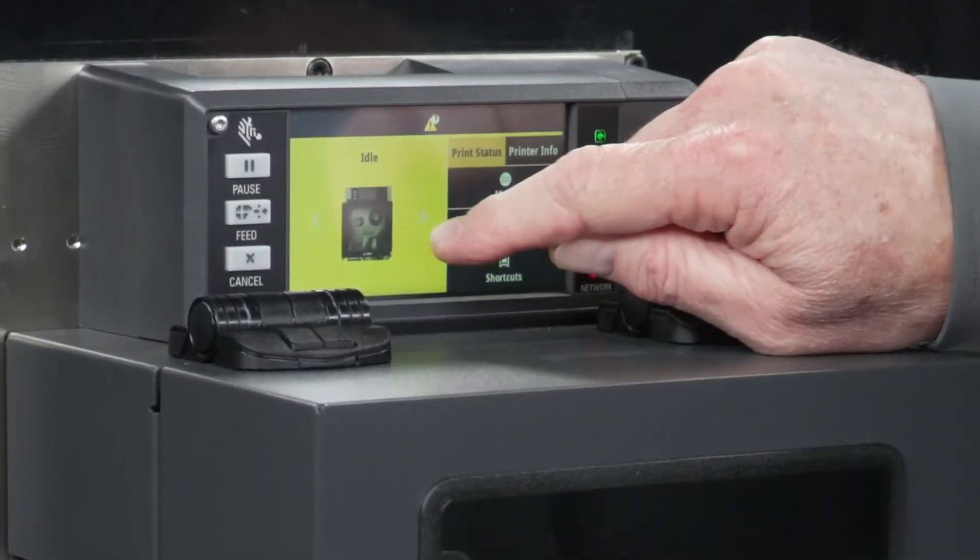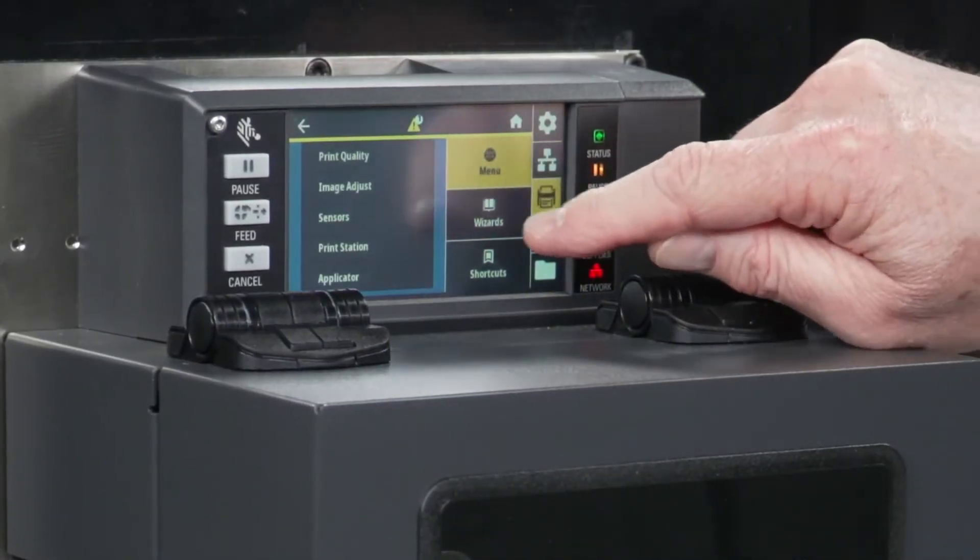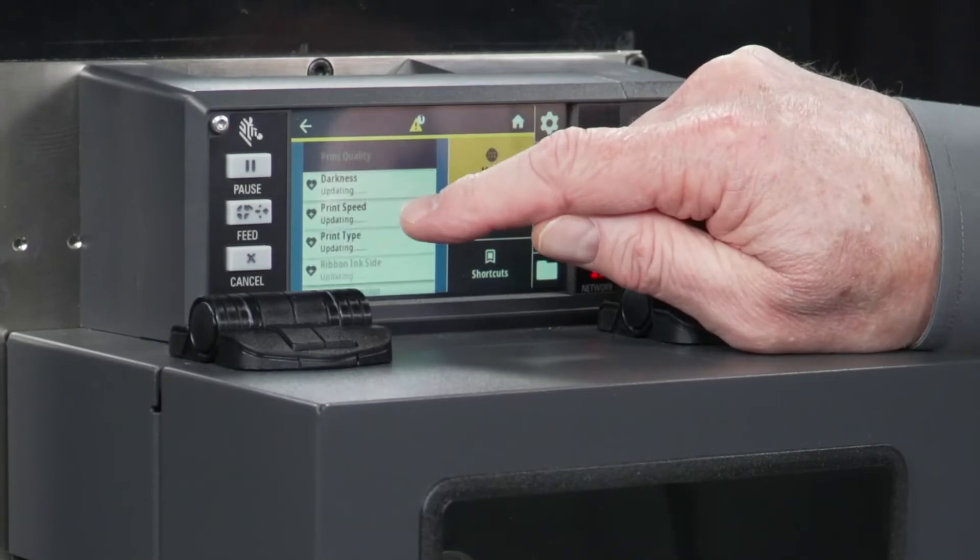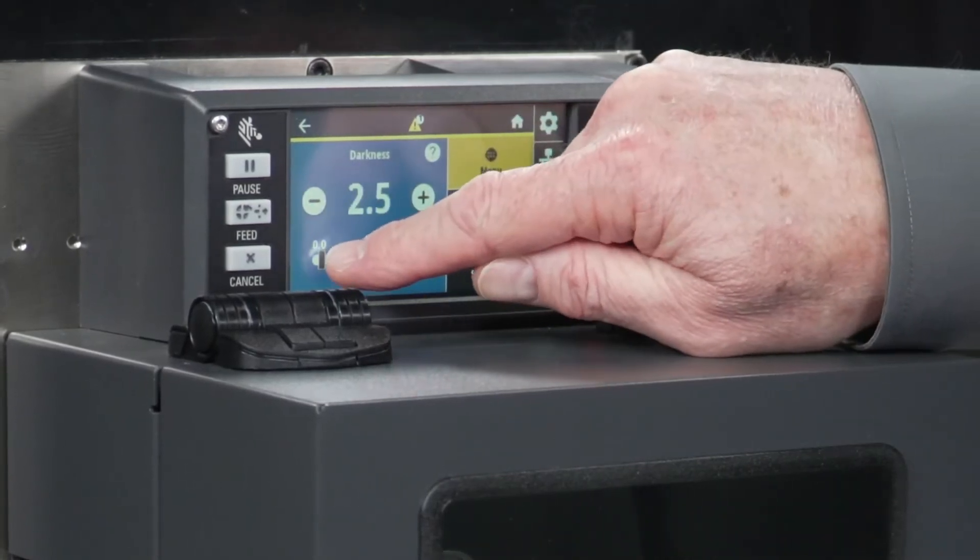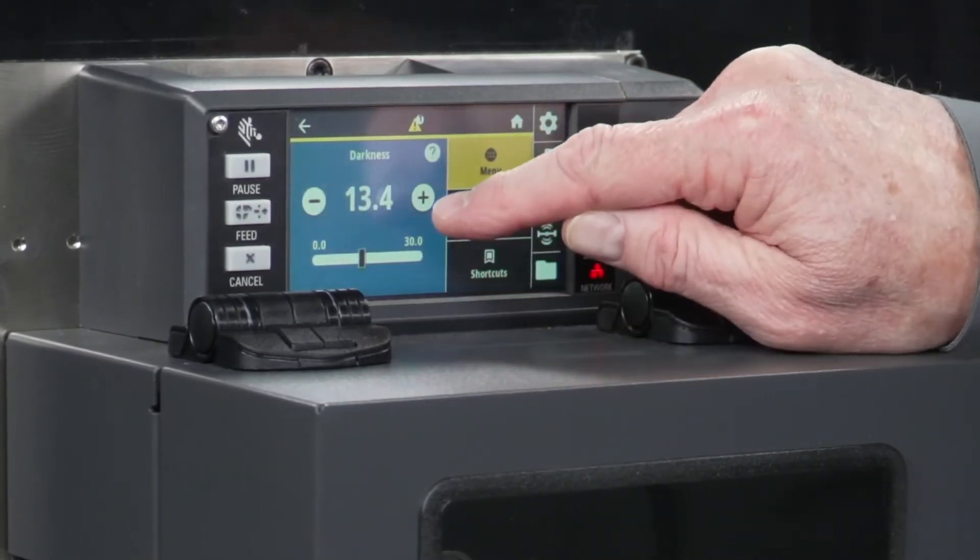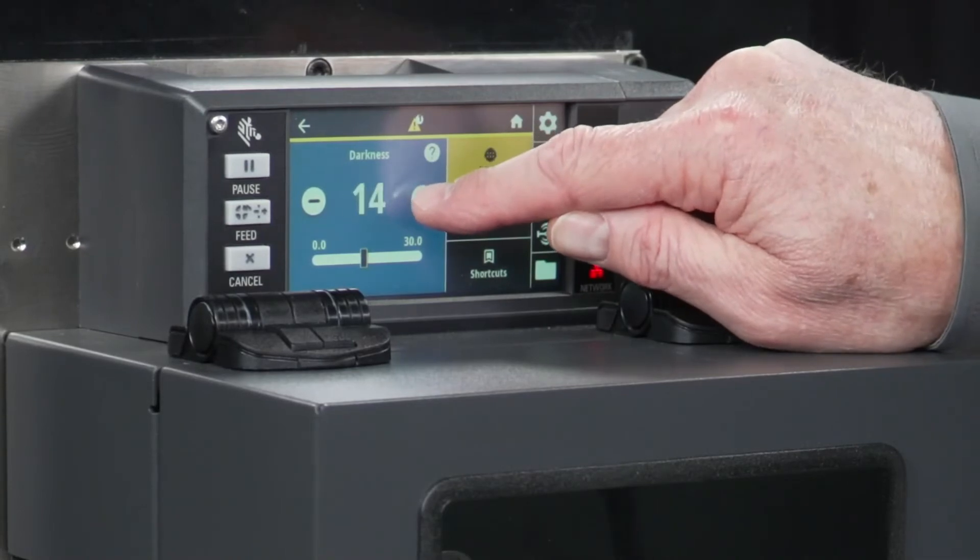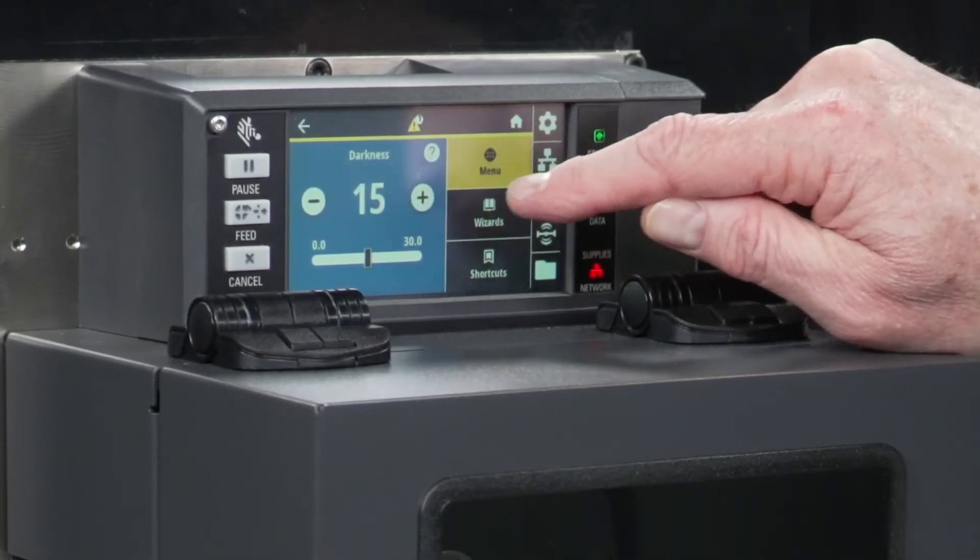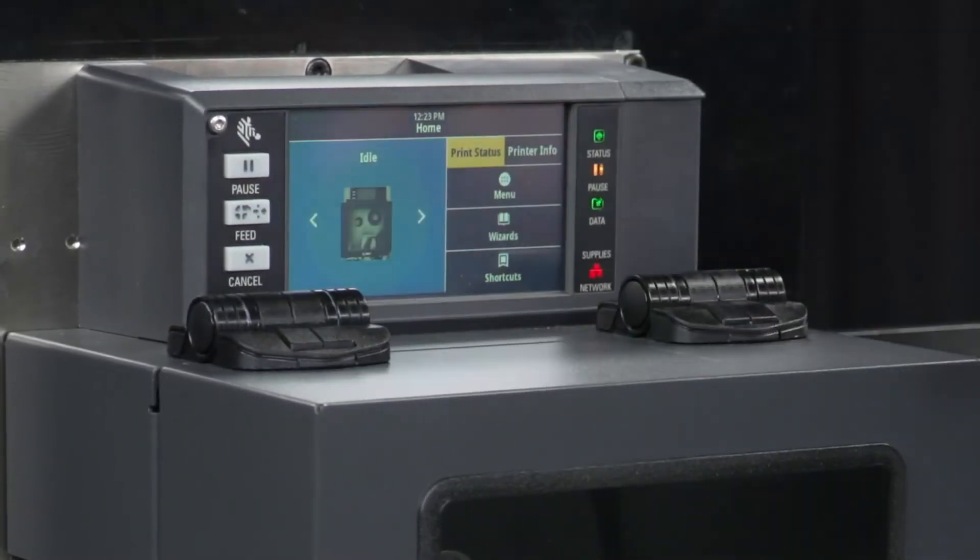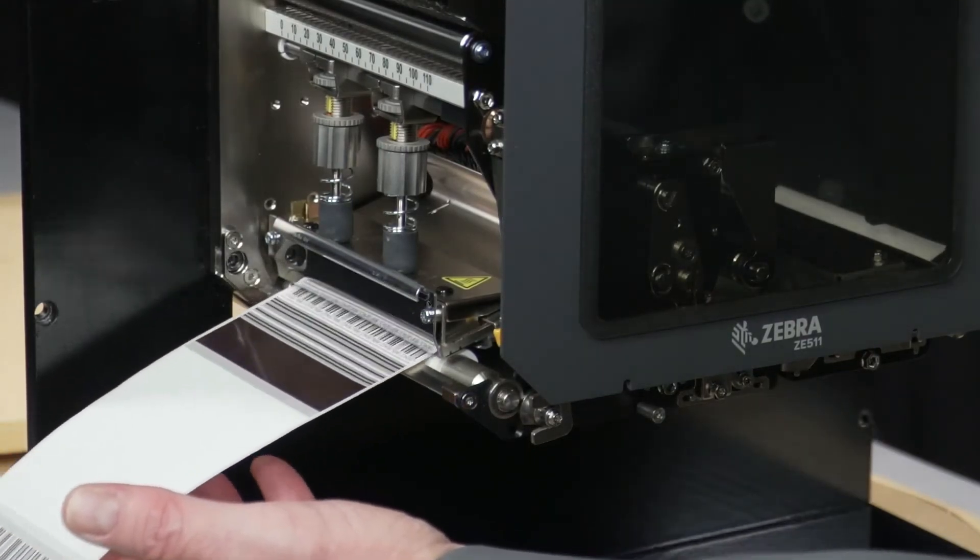I can come in, go back into my menu, my printer, print quality, darkness, bring this back up to 15 was looking pretty good. So we'll leave it at 15. Now we'll take a look at it. We see the quality looks good.